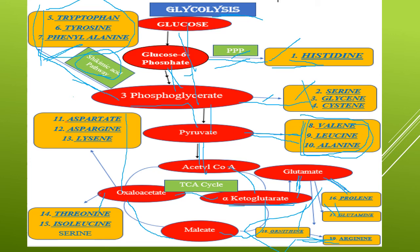From glutamate, four amino acids are synthesized: proline, glutamine, ornithine, and from ornithine, arginine. Alpha-ketoglutarate is converted to malate, then oxaloacetate, and from oxaloacetate six different amino acids are synthesized: asparagine, aspartate, lysine, threonine, isoleucine, and serine. This completes the biosynthesis of amino acids. The significance: it involves synthesis of various amino acids, these amino acids act as intermediates in the biogenesis of various secondary metabolites, and most amino acids are obtained from glycolysis or the TCA cycle.